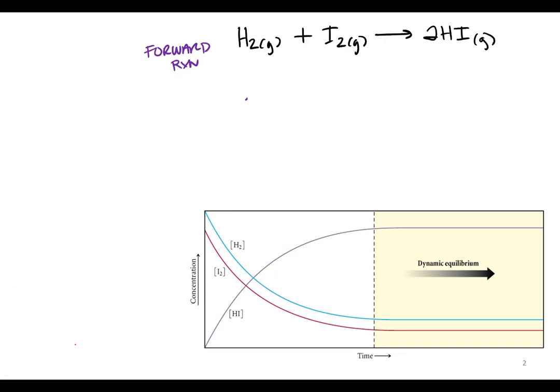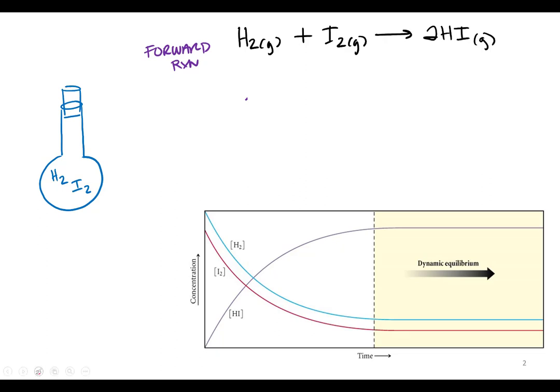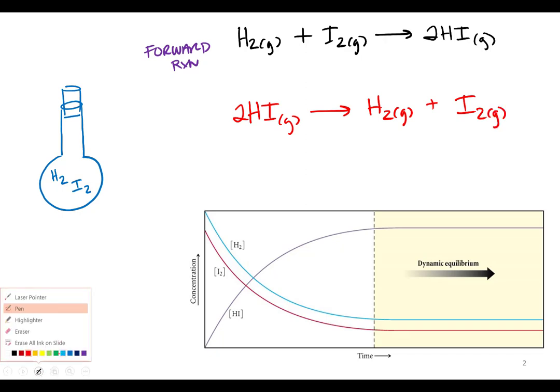So if you put hydrogen and iodine in a flask, and put a stopper on, these are gas molecules, they start bumping into each other and making HI. Then, eventually, once you start building up some HI, it turns out the two HI's will bump into each other and make hydrogen and iodine. That is what we call our reverse reaction.